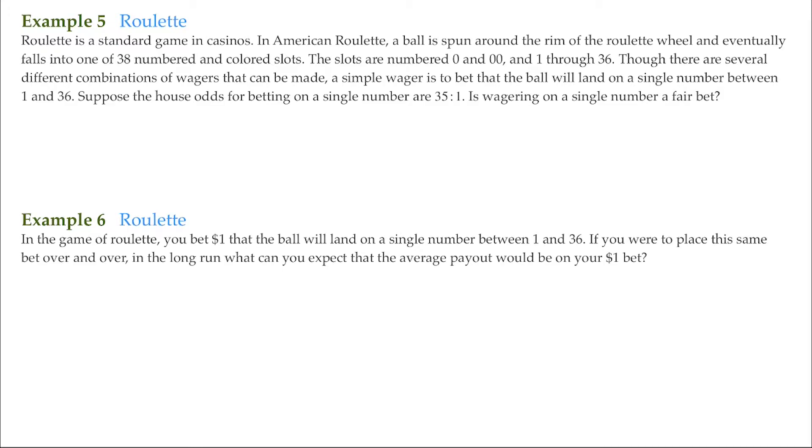The difference between house odds and true odds is true odds calculate the actual chance of winning, while house odds are calculated to guarantee that the casino will make money even on winning bets.